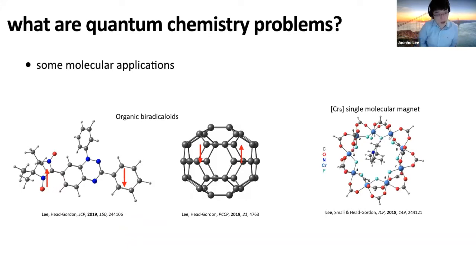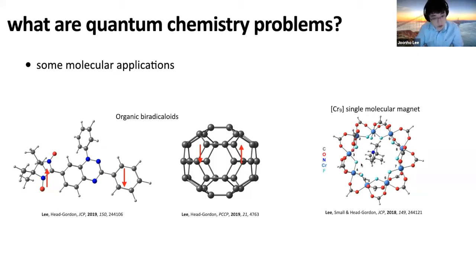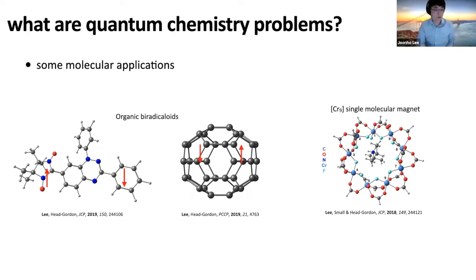Another class of example is becoming quite relevant for quantum information science, because single molecular magnets can be used to build qubits for quantum computers. This one has nine chromium atoms, and each chromium atom has three unpaired electrons. Overall, the ground state of this complex is S equals three-halves. Most of the electrons localized at chromium atoms are antiferromagnetically coupled, all the way down to the three-halves spin sector. This is a prototypical strong correlation problem beyond the reach of exact diagonalization, and we develop methods to figure out the ground state spin sector.